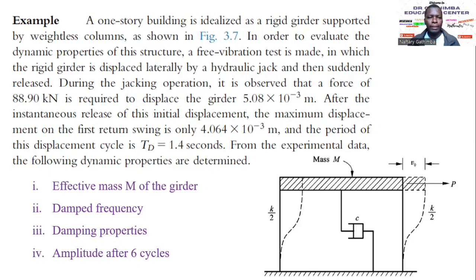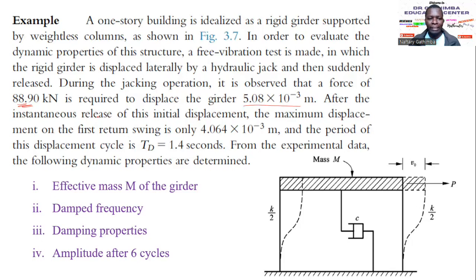Let's look at a short problem on structural dynamics. You are given a one-story building idealized as a single girder supported by weightless columns as shown in the figure. Since it's a one-story structure, it's a single degree of freedom system. To evaluate the dynamic properties of this structure, a free vibration test is conducted. The girder is displaced laterally by a hydraulic jack and then suddenly released — so this is not forced vibration. During the jacking operation, a force of 89 kN is required to displace the girder.